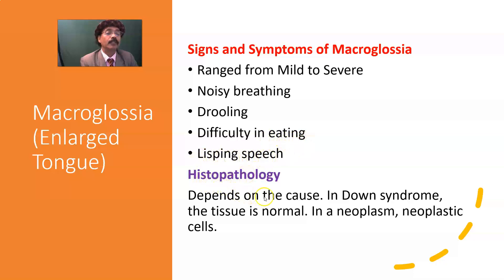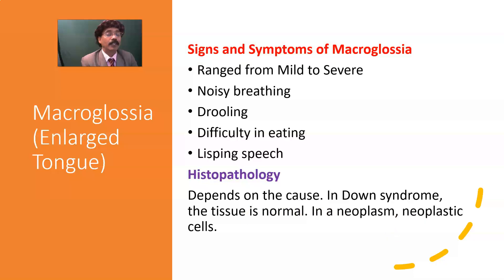Histopathology depends on the cause. In Down syndrome, the tissue is normal. In neoplasm or tumor, we will get neoplastic cells. In amyloidosis, we get amyloid material. So it depends on the cause or etiology.